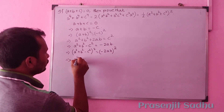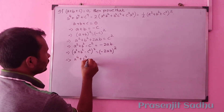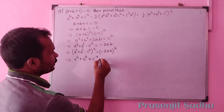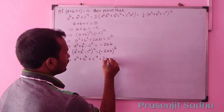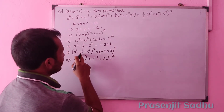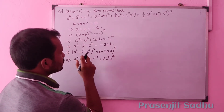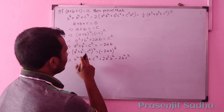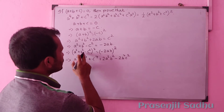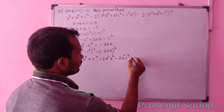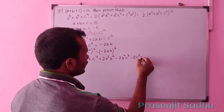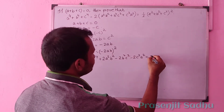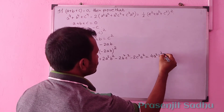Expanding the left side using the identity, we get a to the power 4 plus b to the power 4 plus c to the power 4. The a² and b² terms are positive, giving plus 2a²b². This b² and c² term is negative, so minus 2b²c². And c² and a² have opposite signs, so minus 2c²a². This equals 4a²b².